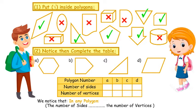Now, A, B, C, D are polygons. Complete this table showing the number of sides and number of vertices for each polygon.